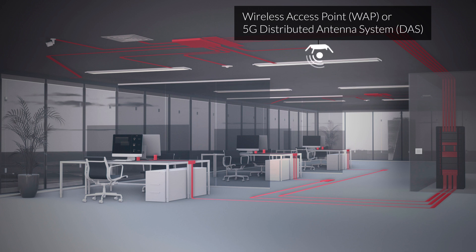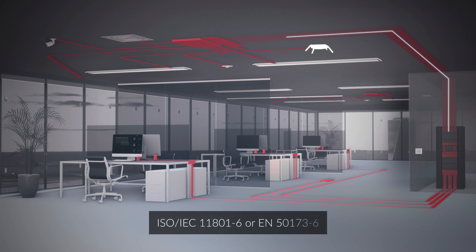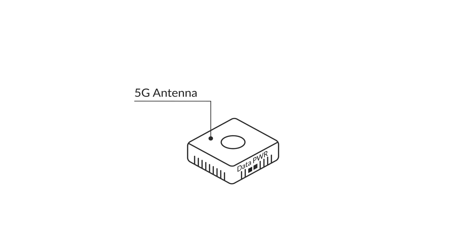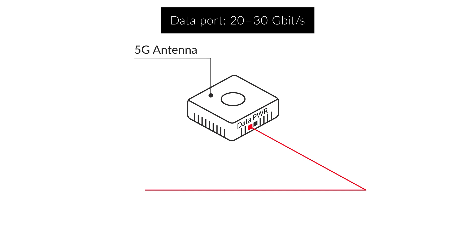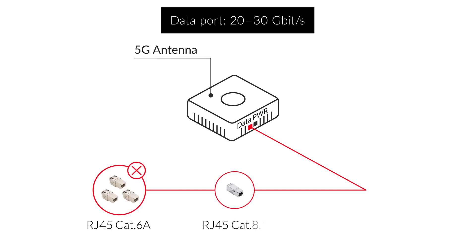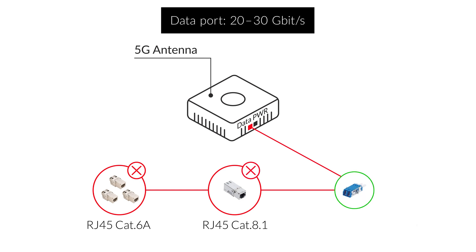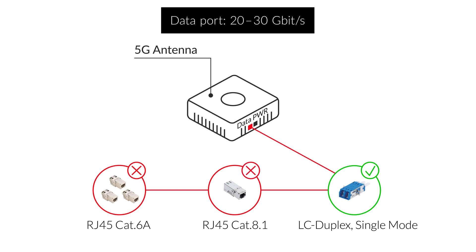Category 6A LAN cabling is currently sufficient for 10 gigabit per second transmission, and the traditional digital ceiling cabling standards cover these requirements. However, next generation wireless devices will need uplink speeds of 20 to 30 gigabit per second. Therefore, Category 6A cabling is reaching its limits, and Category 8.1 cabling will often not provide the distances needed, leading wireless device manufacturers to turn to fiber optic connections.